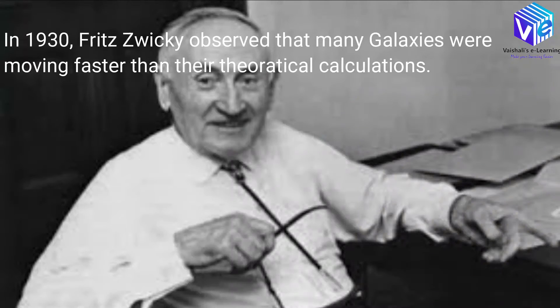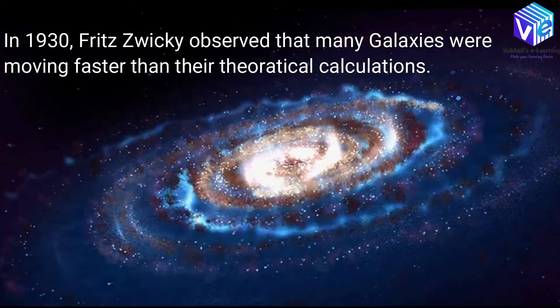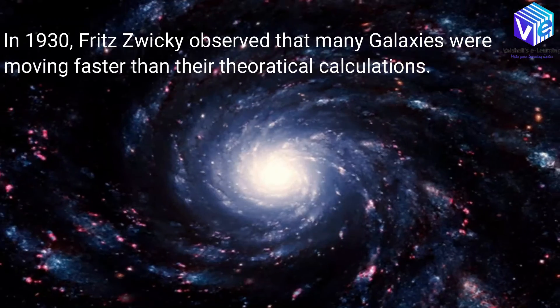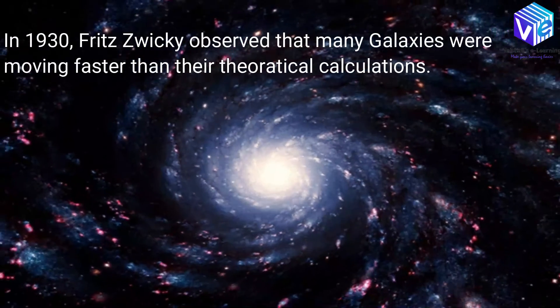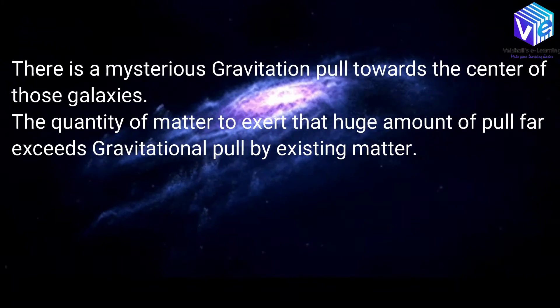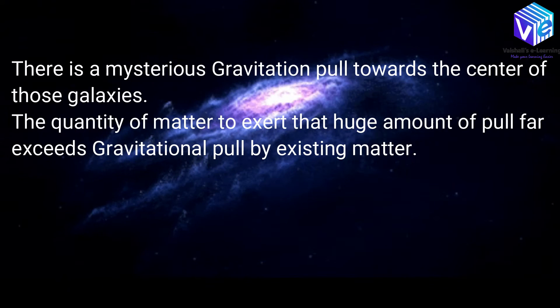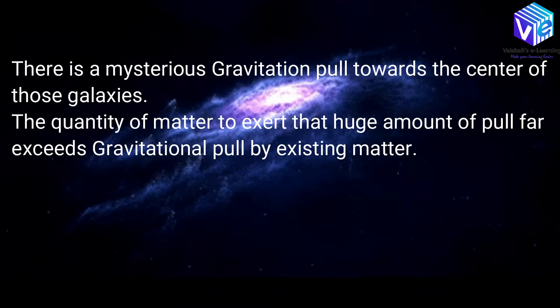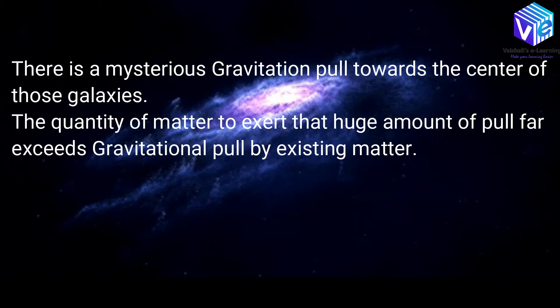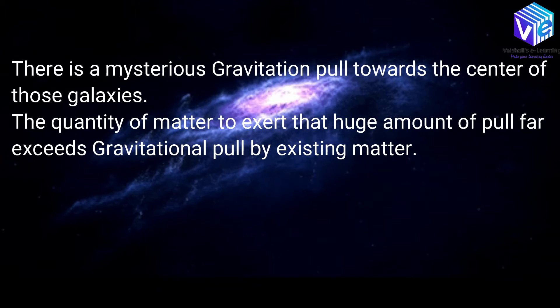It was in the 1930s when Fritz Rieschke observed that many galaxies were moving faster than their theoretical calculations. This implied that there was some mysterious gravitational pull towards the center of those galaxies. The quantity of matter needed to exert such a pull far exceeds the observed matter.